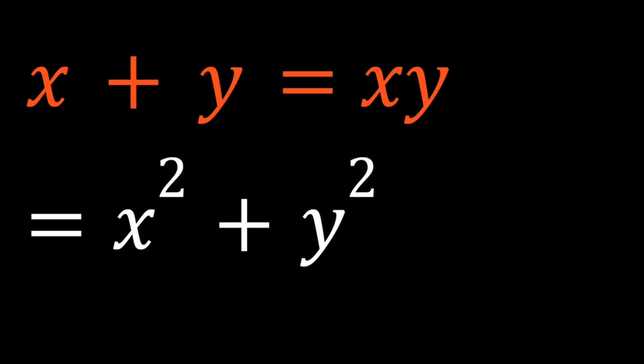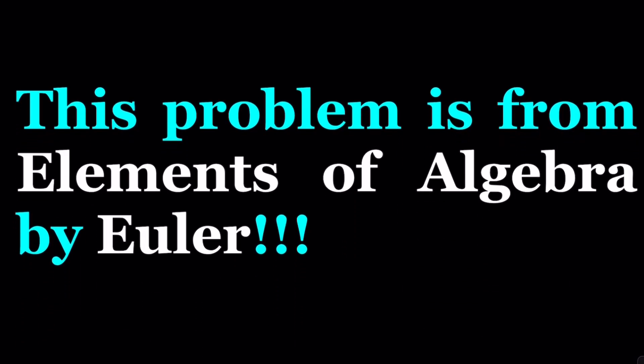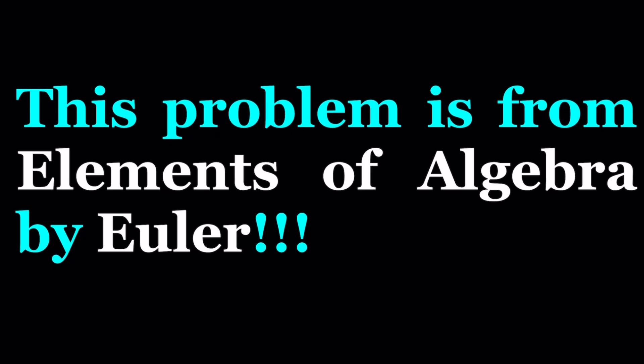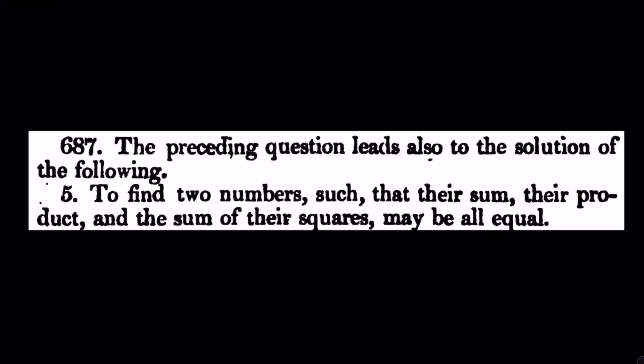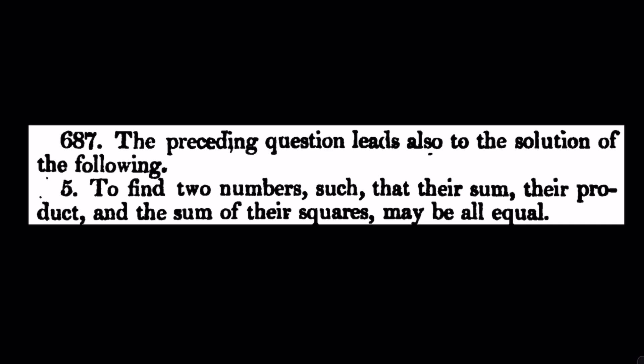Notice that x and y are interchangeable, so when we find an ordered pair we can also switch them around. This problem is from a really nice book called Elements of Algebra by Euler, who is the greatest mathematician of all times. So here is the original statement of the problem: to find two numbers such that their sum, their product, and the sum of their squares may be all equal.